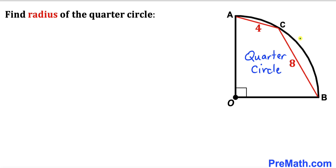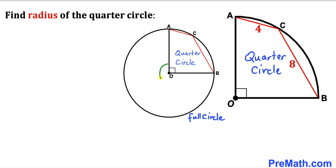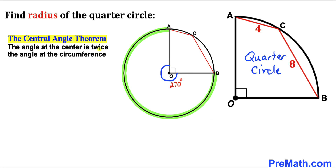We are dealing with this quarter circle, and in the next diagram we place it within a full circle. We can see that the whole angle is 360 degrees and the quarter circle gives us a 90 degree angle, so therefore the remaining angle is 270 degrees.